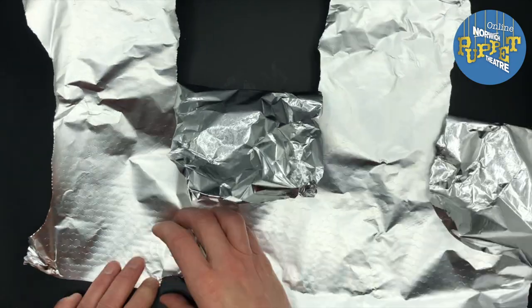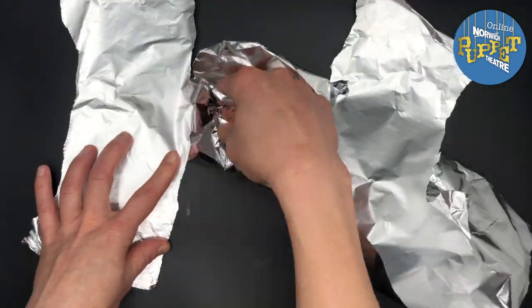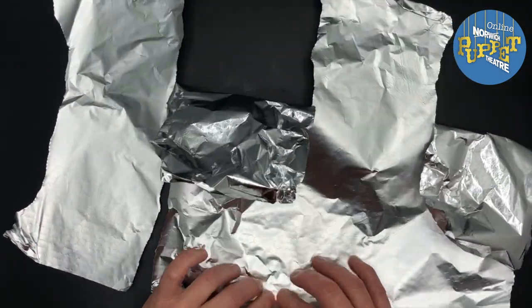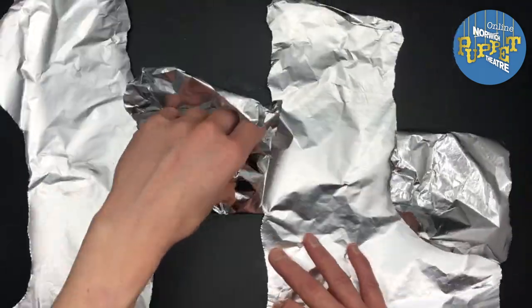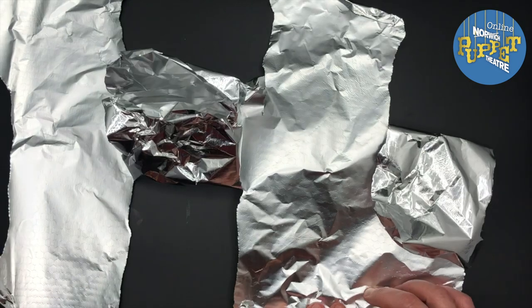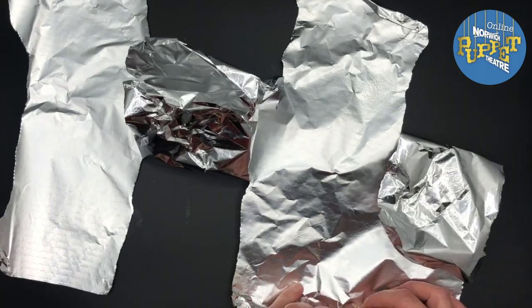So then you turn around your foil and do the same on the other side. So tearing from the long edge towards the middle but not all the way into the middle. And repeat this again a bit further along and again a bit further along.